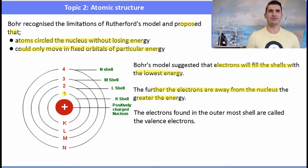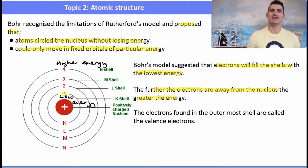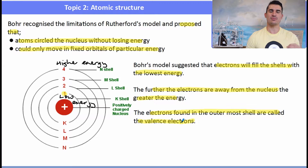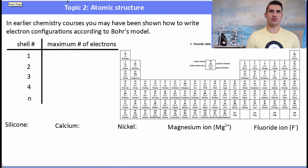The further away from the nucleus, the higher the energy of the shell. Electrons closer to the nucleus are more tightly held and have lower energy than those in the valence shell. The valence shell is the outermost electron shell and its electrons are described as valence electrons. In earlier chemistry courses you've probably been shown how to write electron configurations according to Bohr's model.